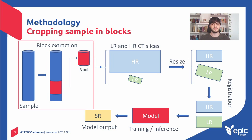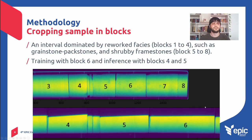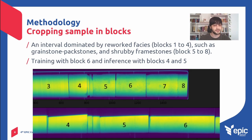The first step of the workflow is to crop a block of the sample. This step is interesting when the scan has more than one piece of sample inside, which is precisely my case. I used a core sample composed of around eight blocks, composed mostly by reworked faces — blocks one through four — and shrubs from block five to eight.